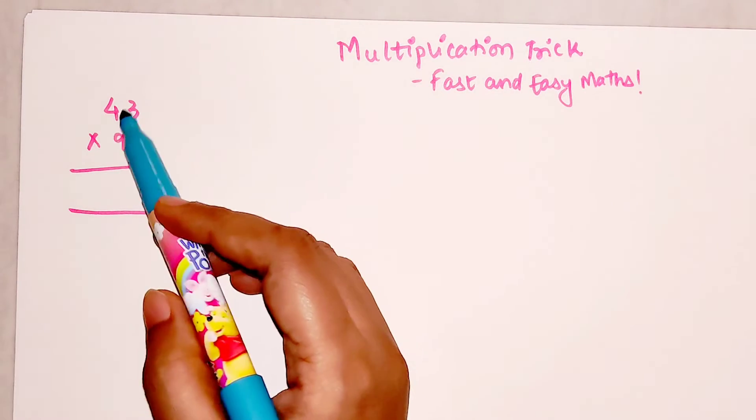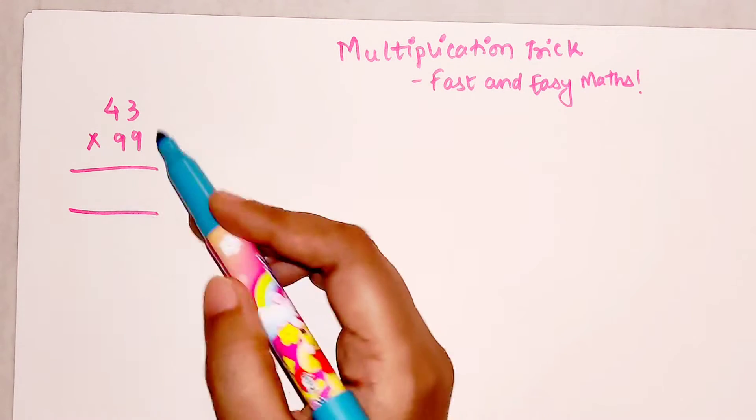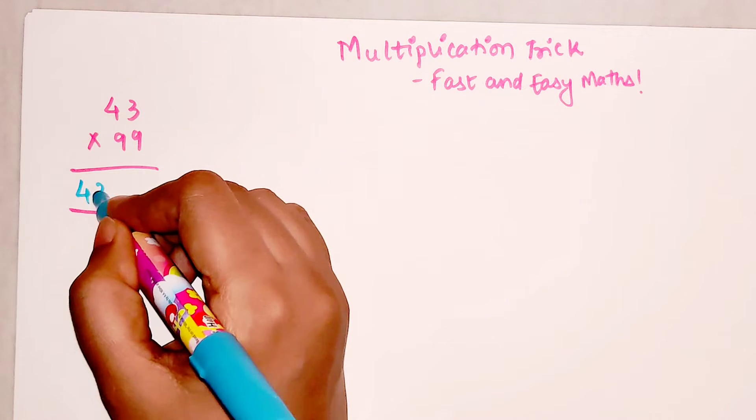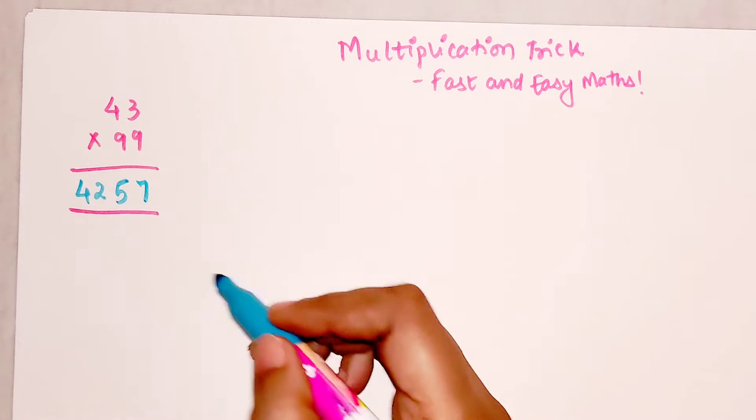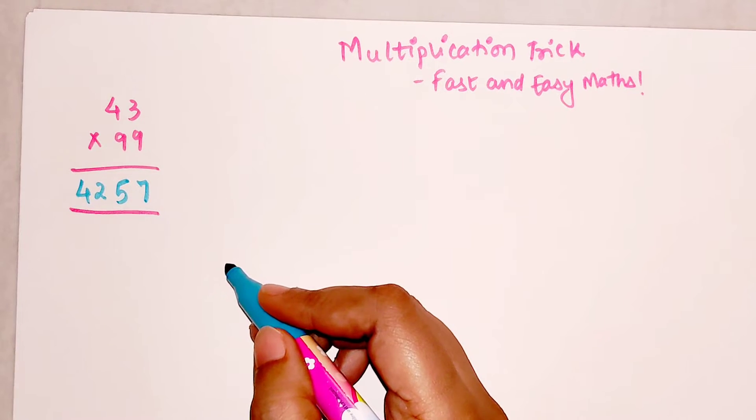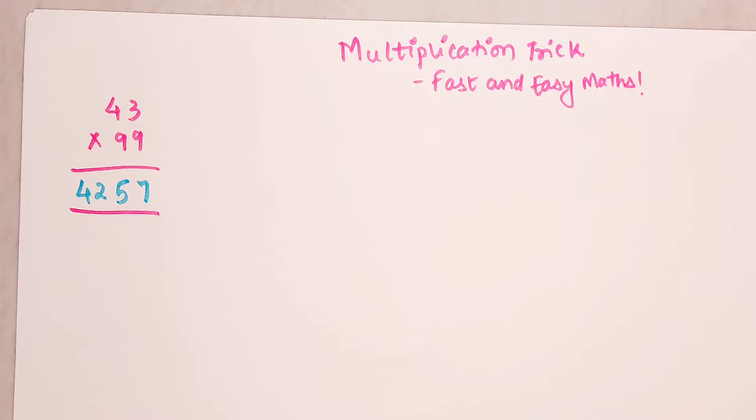So here the answer for this one, 43 into 99, the answer is 4257. So that is your answer.